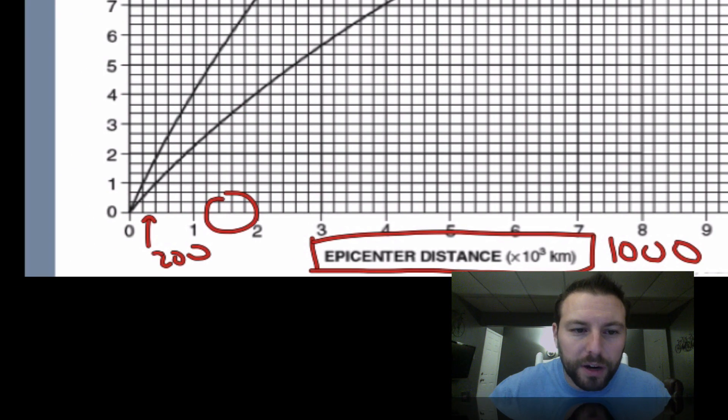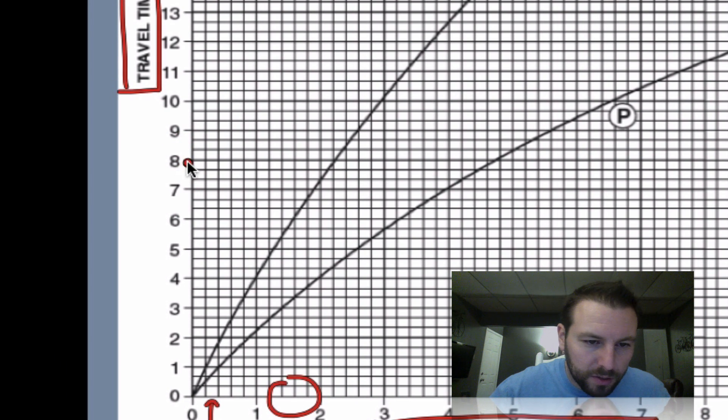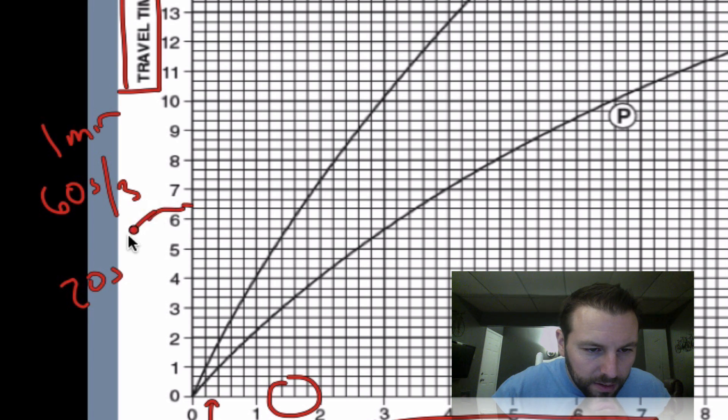We can do the same to figure out what each box is for minutes. So if we go between 8 and 9, there's 1, 2, 3 boxes. So 1 minute, or 60 seconds, divided by the 3 boxes is 20 seconds. So each box here is 20 seconds. So we go up by each box of 20 seconds, and on the x-axis going across, each box is 200 kilometers.